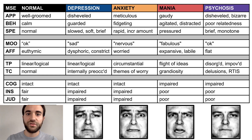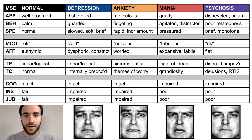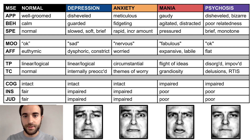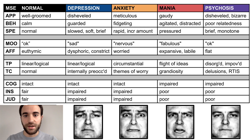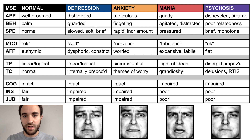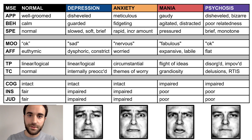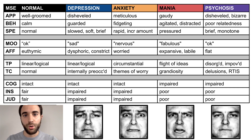An example of a flat affect is shown below. Their thought process may be grossly disorganized, or may be impoverished, meaning overall lacking in content. They may also endorse delusions — most commonly paranoid delusions and referential delusions — and may appear to respond to internal stimuli throughout the interview, for example suddenly glancing at empty spaces in the room as though someone is there, or speaking to themselves. Their cognition will be impaired, and due to their delusional thoughts, their insight and judgment are often very poor.